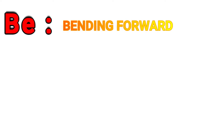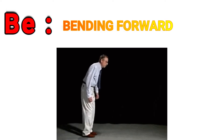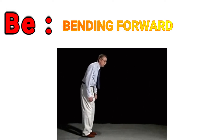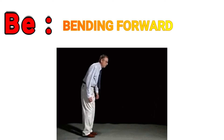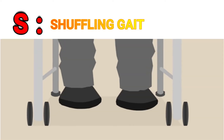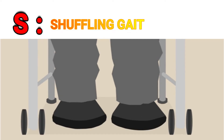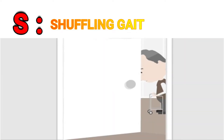B is for bending forward — patients with Parkinson's disease usually stoop forward, and this can be regarded as a notable symptom. S is for shuffling gait — shuffling gait appears as if the patient is dragging their feet as they walk; steps may also be shorter in stride.